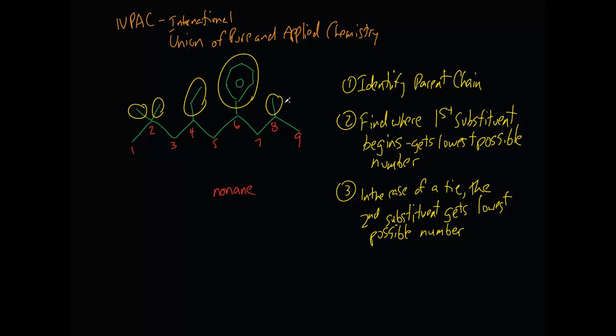Obviously, if this wasn't here, there would be no question. Well, this is where the first substituent or set of substituents begins. So this is going to be number one, number two. It gets lowest possible number. But now we have a tie. We could start from either end. But now we have to get the second substituent lowest possible number. So these two guys win, right? These two guys win over this guy over here. So that's why we begin on this side.